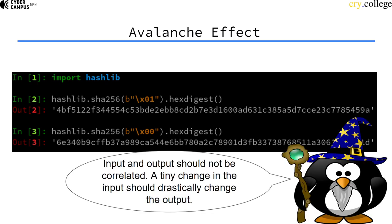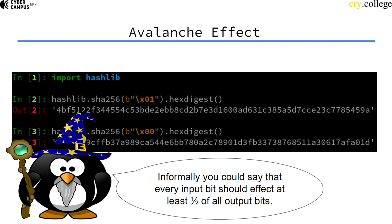A tiny change in the input should drastically change the output. As a rule of thumb, every input bit has to affect at least half of all output bits within the hash function, and if that's the case, that's a good start.